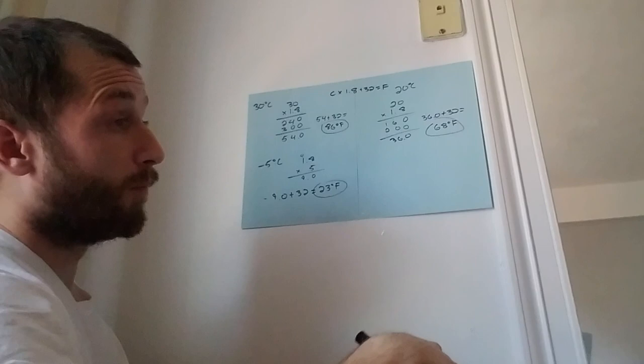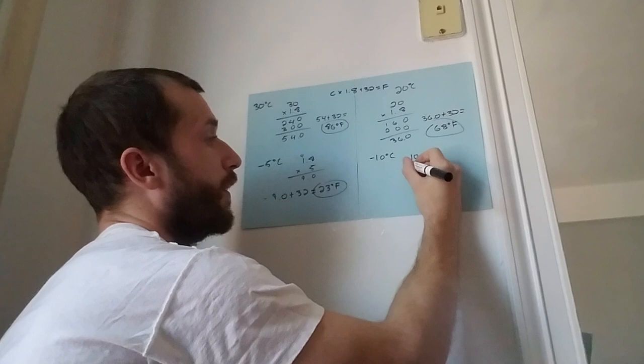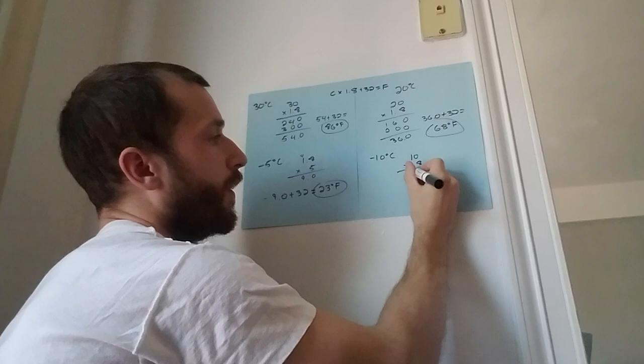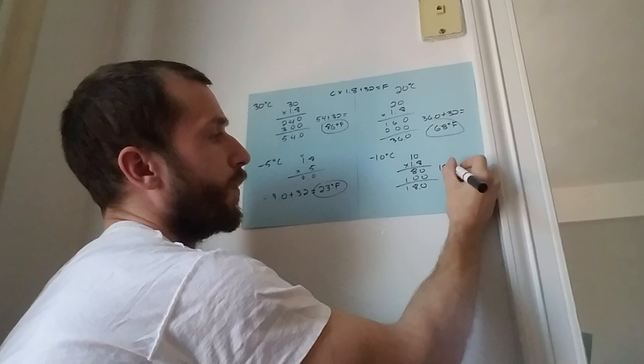Let's go even lower. How about negative 10 degrees Celsius? Same thing: 10 times 1.8. 18.0. Negative 18.0.